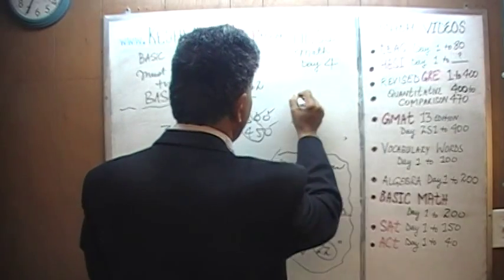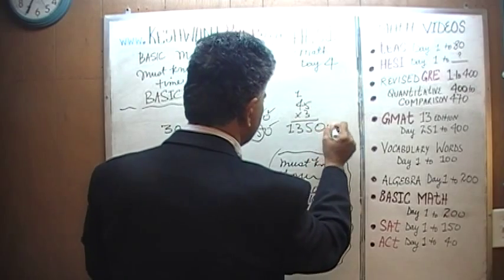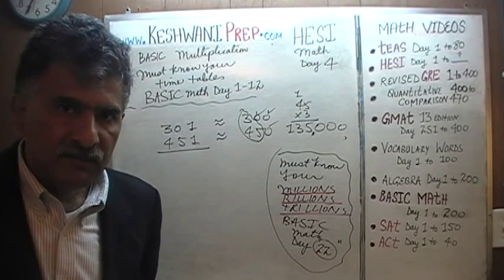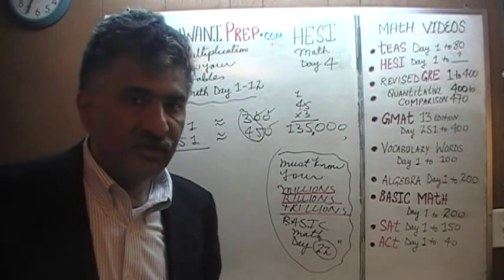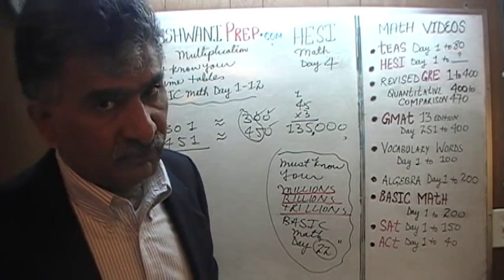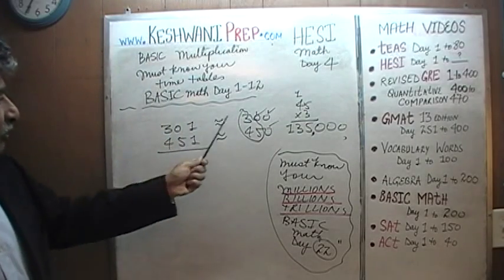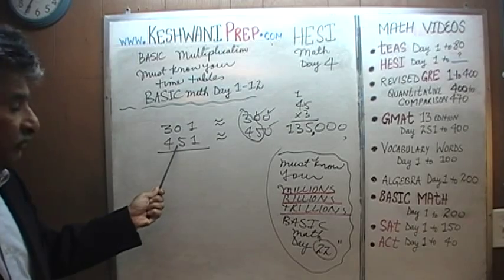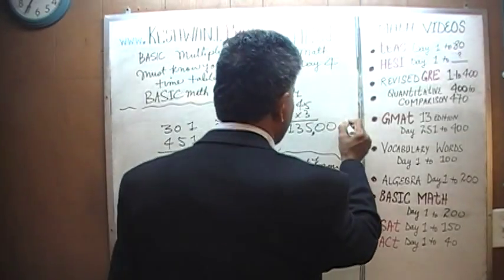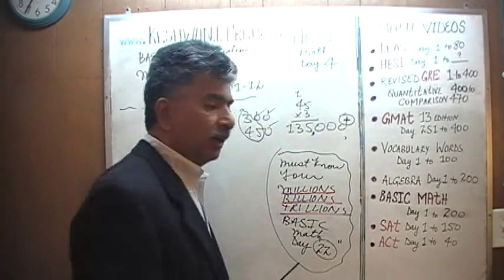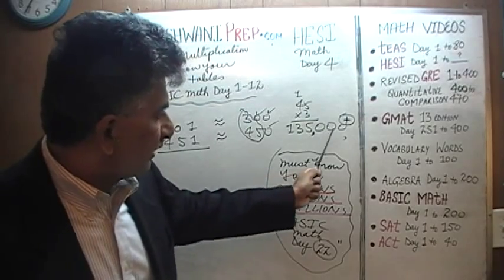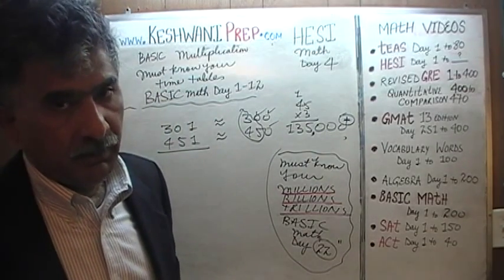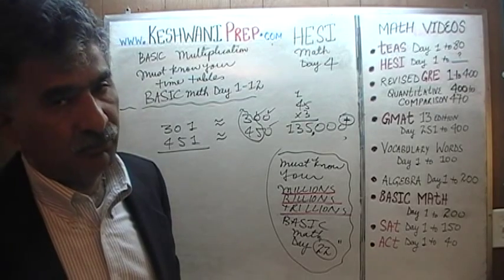The correct answer is going to be approximately 135,000. Let's find out whether our estimation is an underestimation or an overestimation. We pretended 301 was 300 — but the exact number is 301, so that's an underestimation. We used 450 instead of 451 — also an underestimation. Both roundings went down, which tells us the correct answer is going to be slightly more than 135,000.